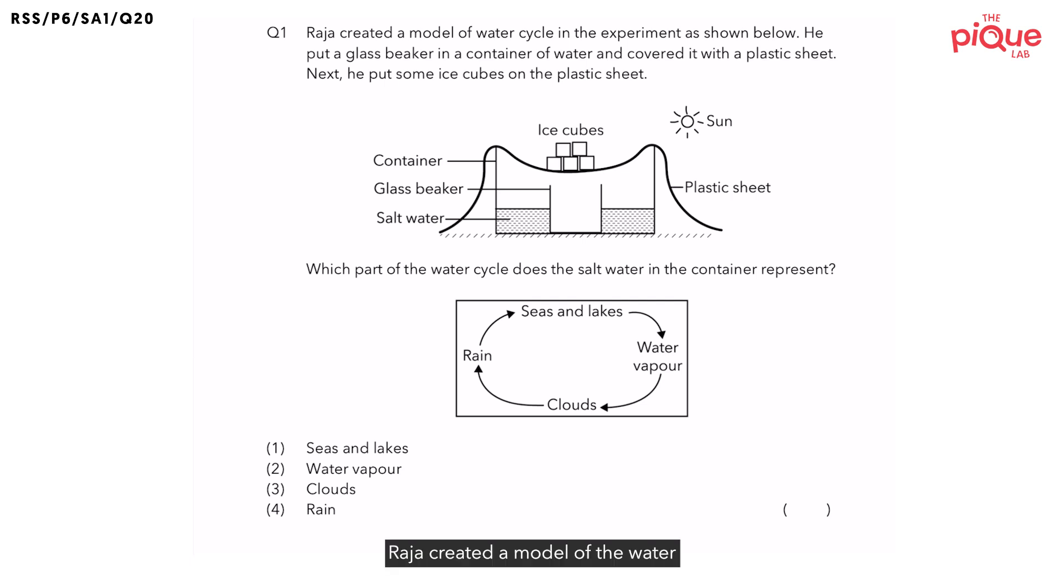Question 1. Raja created a model of the water cycle in the experiment as shown below. He put a glass beaker in a container of water and covered it with a plastic sheet. Next, he put some ice cubes on the plastic sheet. And the question is asking, which part of the water cycle does the salt water in the container represent?